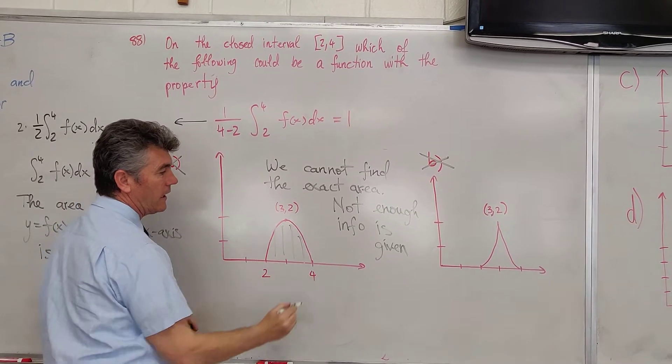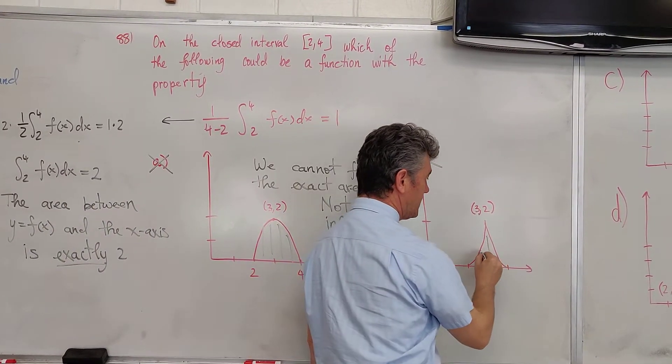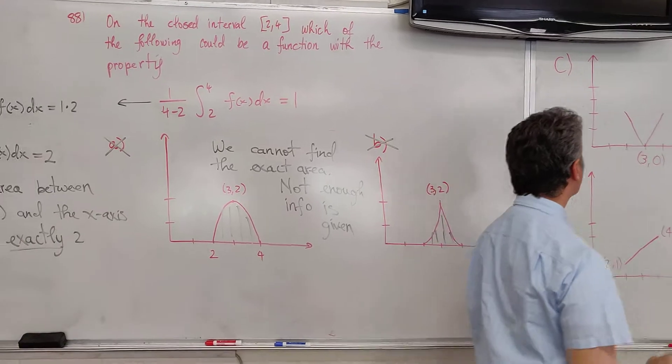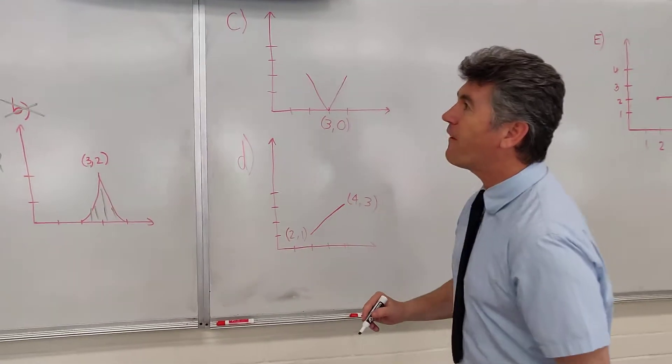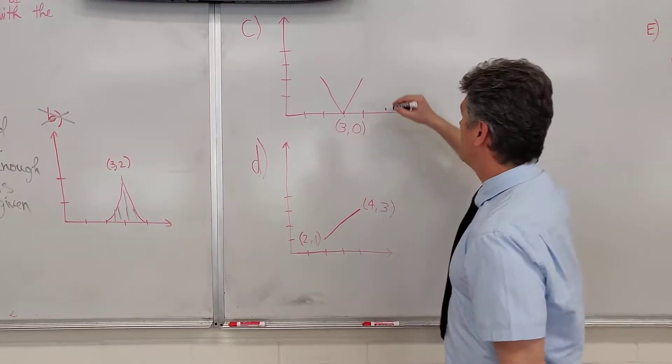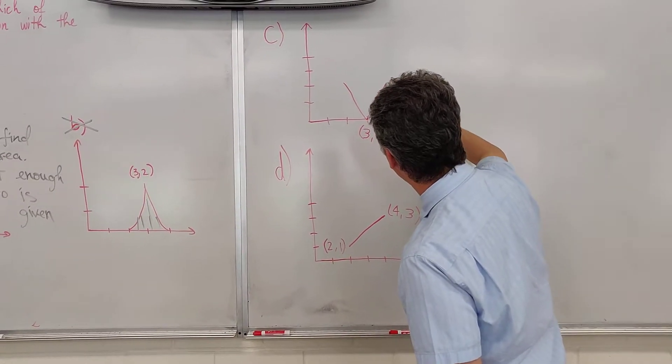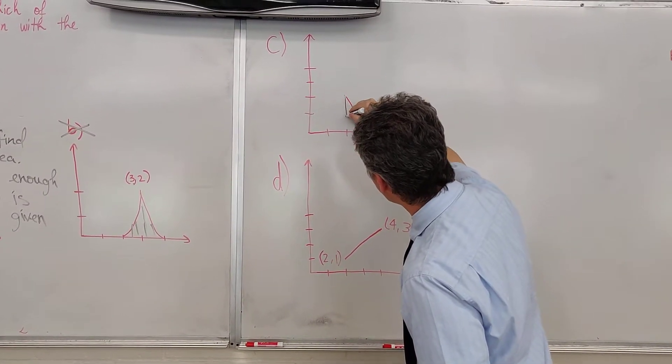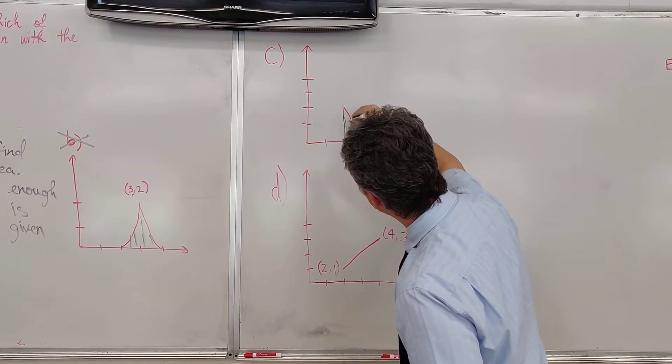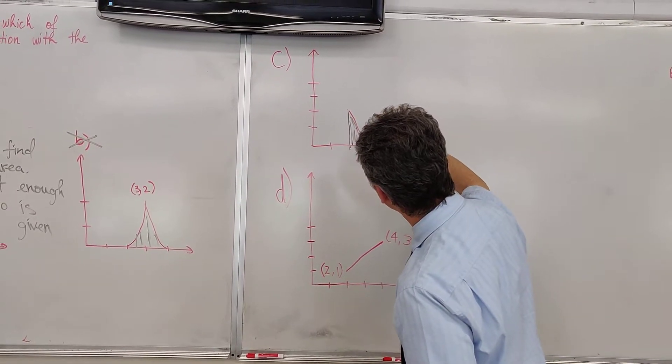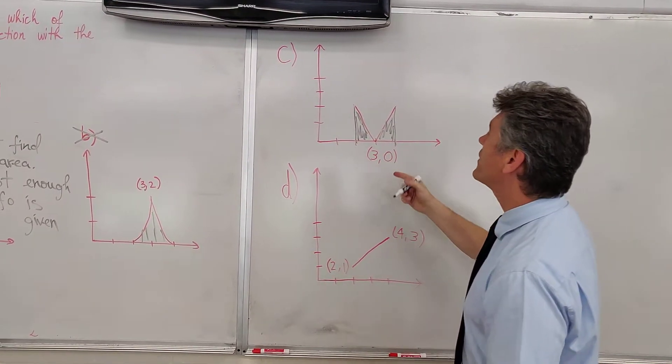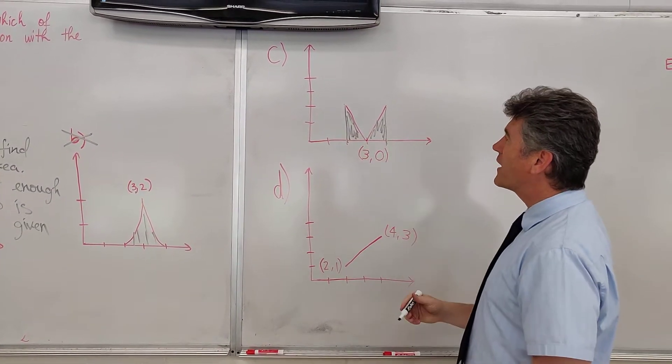There's no way I can find this area. Let's move on to choice C. Can I find that area? Let's see. Draw two vertical lines. This is the area that we're talking about. We're talking about two triangles.